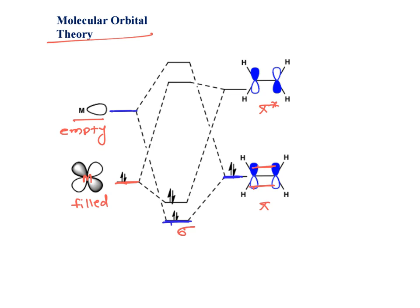The next one is backbonding. Backbonding is between metal alkene filled orbital with empty orbital of alkene which forms pi bond. This is pi star and this is sigma star. In this fashion, we can explain bonding in metal alkene complexes.